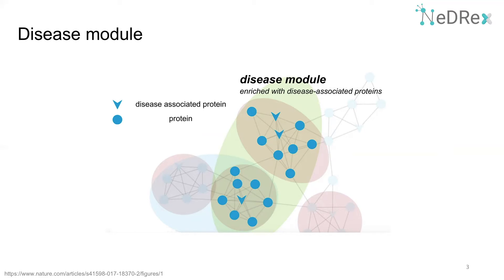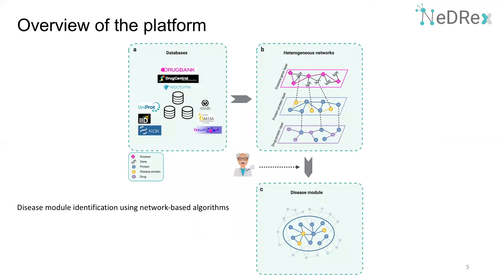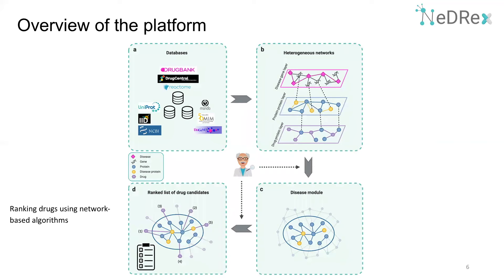Consequently, potentially repurposable drugs can be identified in silico by carrying out three steps. First, the heterogeneous biological network is constructed by integrating data from multiple biomedical databases, containing knowledge such as protein-protein interactions, disease genes, and drug-protein associations. Next, the constructed biological network is mined to derive disease modules associated with the disease of interest. Finally, drugs with known targets that are contained in or in close vicinity to the extracted disease modules are prioritized.